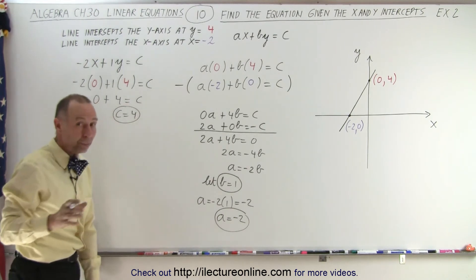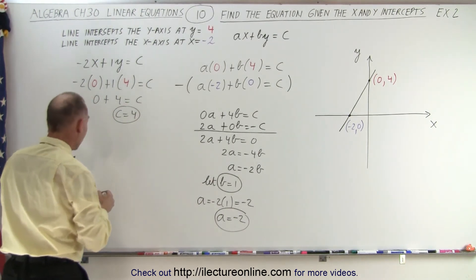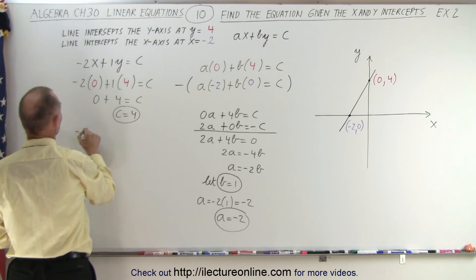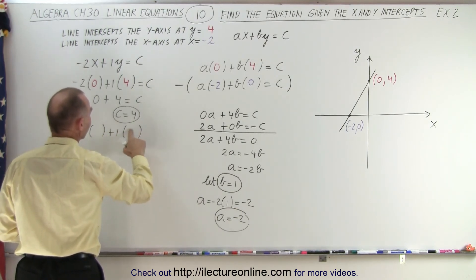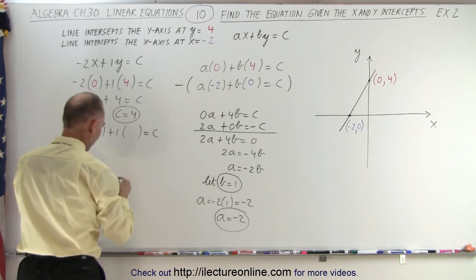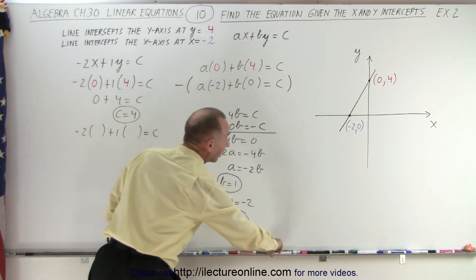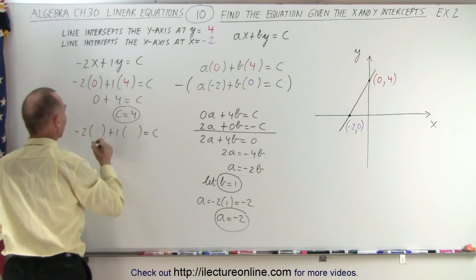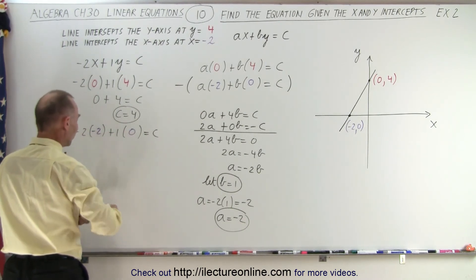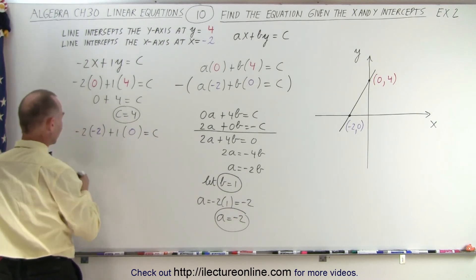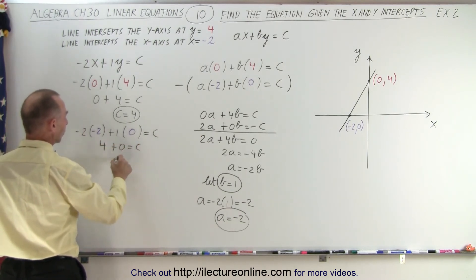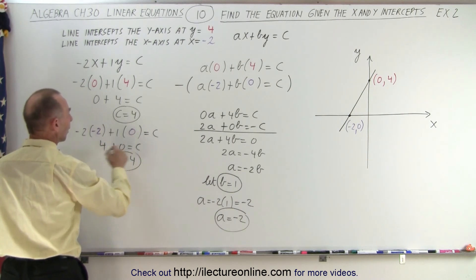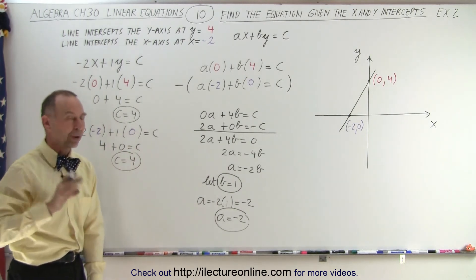Let's plug in the other point to see if we get the same value for c. We get negative 2 times x plus 1 times y equals c. Now we're going to plug in the second point, negative 2 and 0. Notice when I do that, I get negative 2 times negative 2, which is 4 plus 0 equals c, or c equals 4 as well. So either way, we would have gotten the correct value for c.